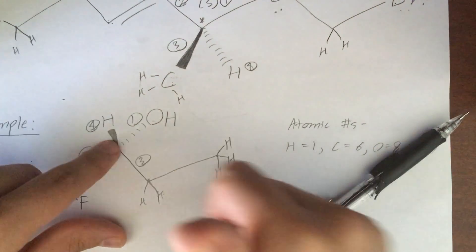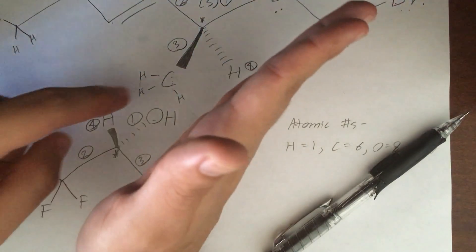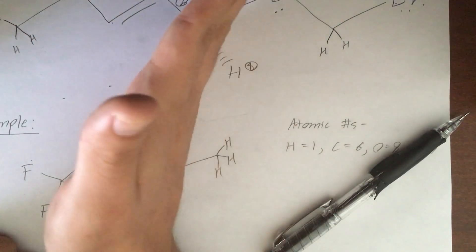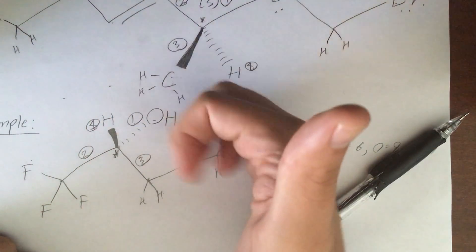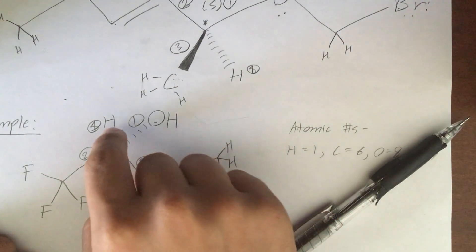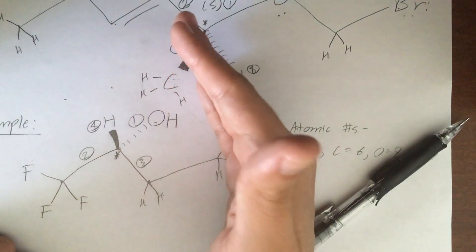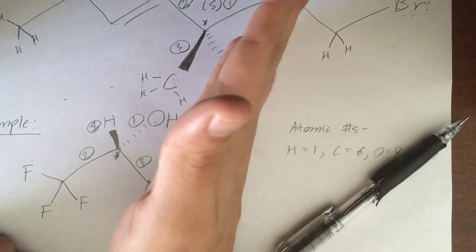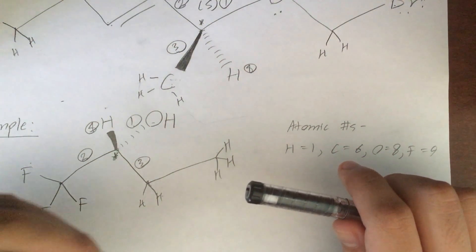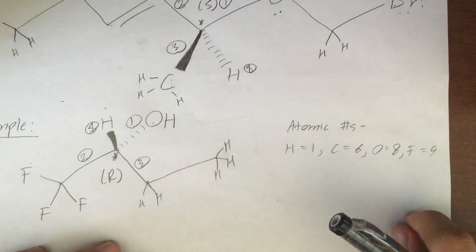Now we point our right thumb in the direction of priority four — the hydrogen — which is pointing out of the page. With thumb pointing out, we point our fingers toward priority one and curl them. We go from one to two to three. This is the natural order of counting. Therefore, this chiral center is assigned the R configuration.